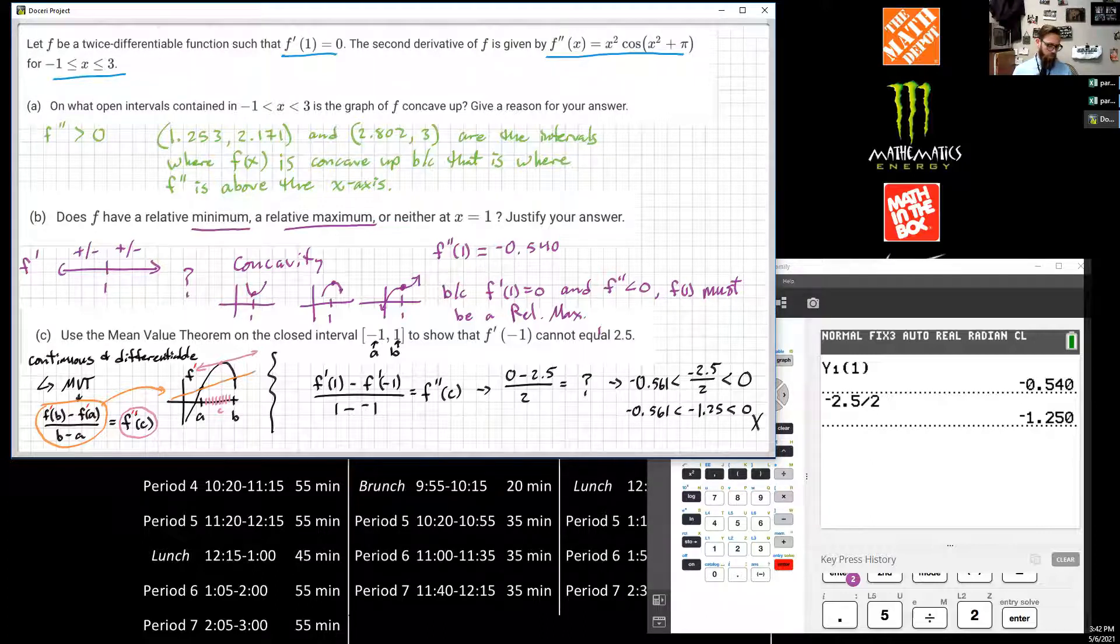Boom, we proved it using math. Therefore, F'(-1) cannot equal 2.5. Oh, dang. That was a doozy right there. Let's do the last one. The last one's really easy.